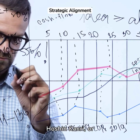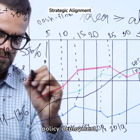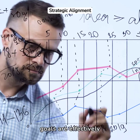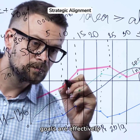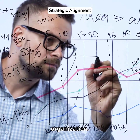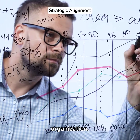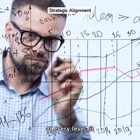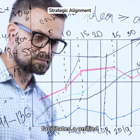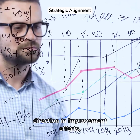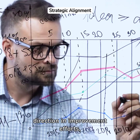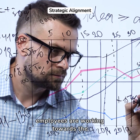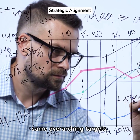Hoshin Kanri, or policy deployment, ensures that strategic goals are effectively communicated and executed throughout the organization. By aligning objectives at every level, it facilitates a unified direction in improvement efforts, ensuring that all employees are working towards the same overarching targets.